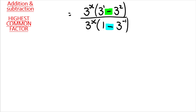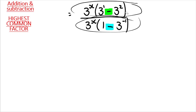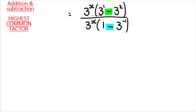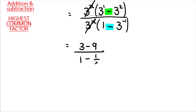Now, because we have one term at the top and one term at the bottom, we may cancel — and three to the power of x divided by three to the power of x cancels to one. If the question says no calculator, you write three minus nine at the top, and at the bottom it's one minus one third — because three to the power of negative one equals one third. That's very important.